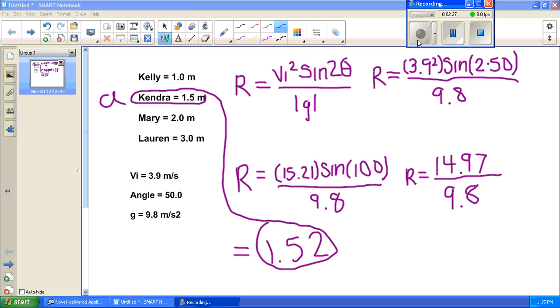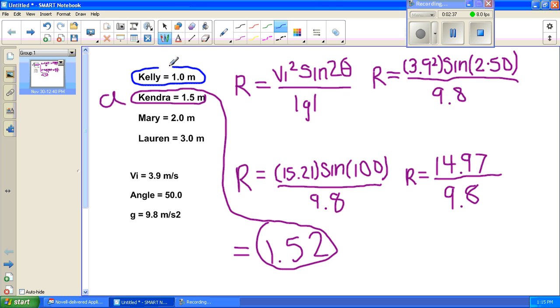Now for the second question B, who might have caught it if she had thrown it more slowly? Clearly, the only other person left behind Kendra would be Kelly, so she would have caught it if she had thrown it slower. We hope this helped you out.